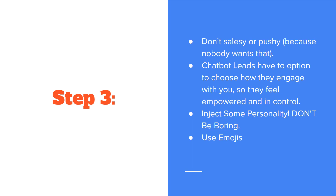Step three is we want to craft our messaging. Now that we've decided what we want our bot to do for us, it's time to figure out how to say it without coming off as salesy or pushy. The beauty of bots is that you can give your customers the option to choose how they engage with you so they feel empowered and in control. Tip number one: inject some personality — don't be boring. People signed up for your bot because they want to hear from you. Think of this as having a one-on-one conversation with people, not a basic email newsletter.